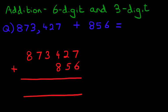Let's label the columns as well. We've got the units column, tens, hundreds, thousands, the ten thousands, and the hundred thousands.